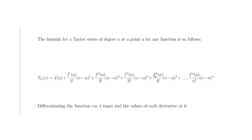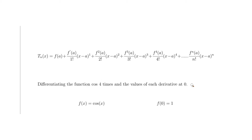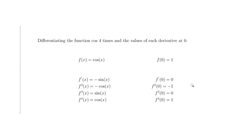Now let's break it down into simple steps. We're going to differentiate cosine four times and evaluate each derivative at zero, building a nice little table one step at a time. Cosine is a good function for this because its derivatives follow a nice repeating pattern.